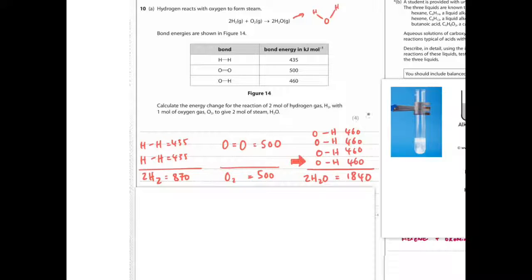So actually, this is a very easy four marks if you get the method right. So you're looking at how many of these bonds exist in the hydrogen molecule. So you've got 2H2, this is 1H2, so you've got two lots of this, HH, HH, each one is 435. So you add up 435, and 2H2 will give you 870. So that's how much energy is in the bonds in the hydrogen.